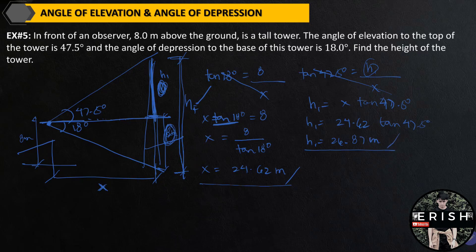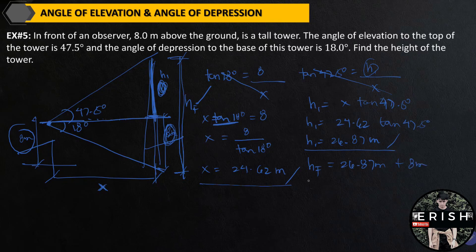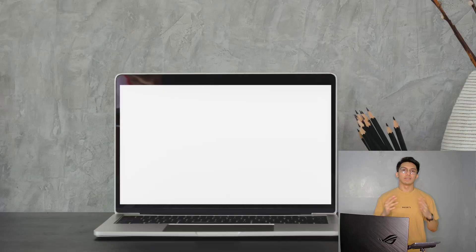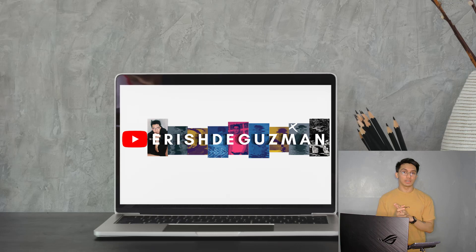Now we can solve the height of the tower. The final height equals 26.87 meters plus 8 meters. The final height equals 34.87 meters. This is the final answer — the height of the tower. And that's all for the angle of elevation and angle of depression. Please like, share, and subscribe for more. Thank you for watching and see you in the next video.